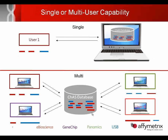In the single user setup, user one looks at their particular data and queries the CHAS database on their local laptop. In the multi-user setup, there's a central CHAS database shared among multiple users. This database could be installed on another computer on the same domain or on a server. User one analyzes their data querying the CHAS database, while user two looks at a different sample but queries the same central CHAS database.